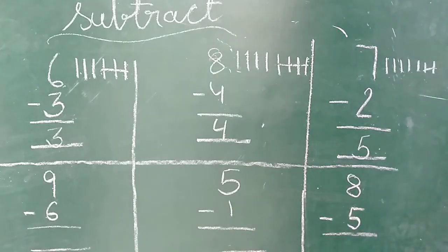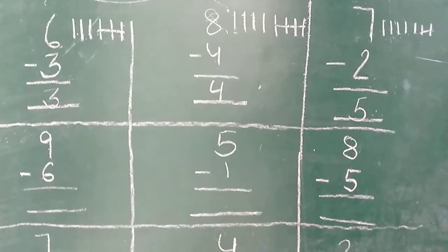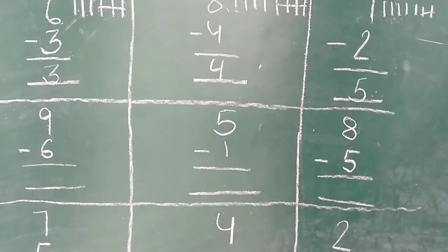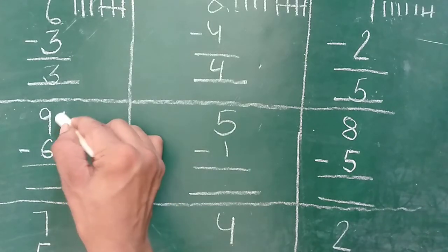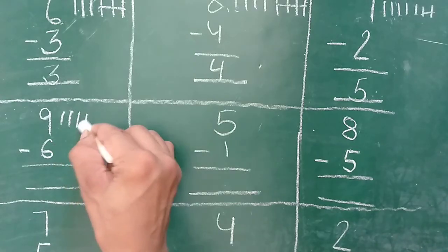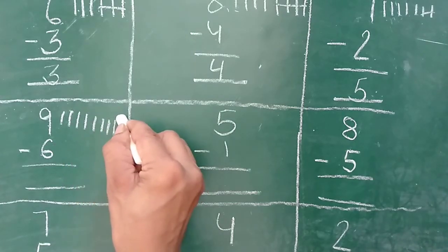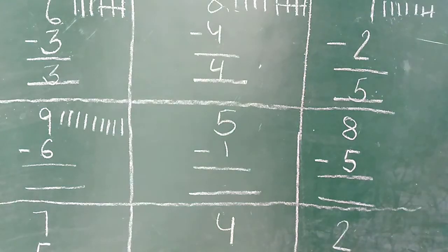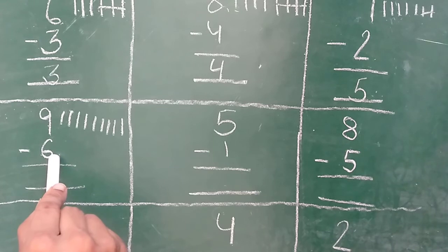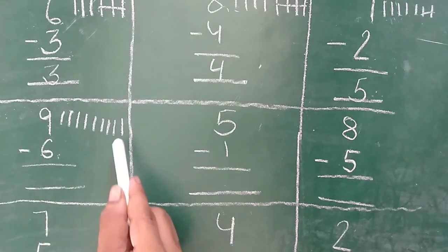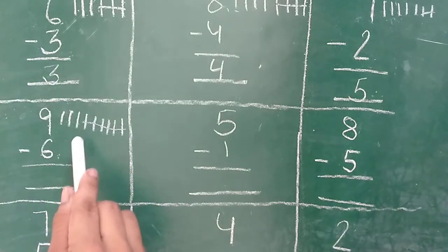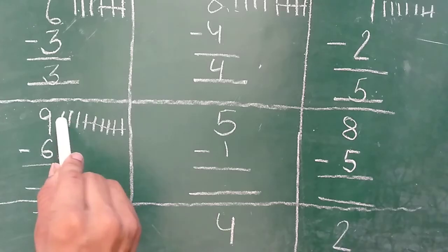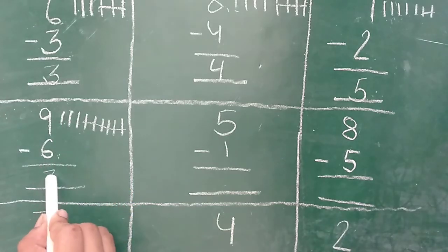Bachey lines ko niche likhna hai. Answer thik hai? Aap next dekhiye. Kitna number hai ye? Nine. Toh kya karenge? Nine lines draw karenge. One, two, three, four, five, six, seven, eight, nine. Nine lines draw ki. Aap kya karenge? Six lines cut karenge. Cross karenge. Count kijiye. One, two, three, four, five, six. Kitni lines bach gai? One, two, three. Our answer is three.